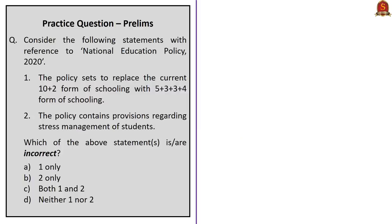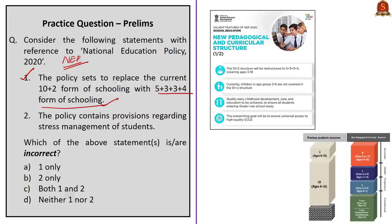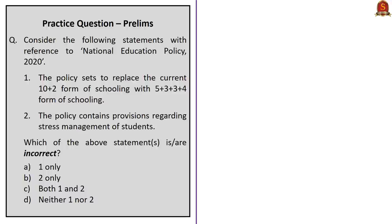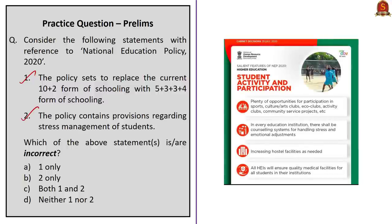Practice question 3: Consider the following statements with reference to the National Education Policy 2020. Statement 1: The policy sets to replace the current 10+2 form of schooling with 5+3+3+4. Statement 2: The policy contains provisions regarding stress management of students. Statement 1 is correct — the new 5+3+3+4 form also includes the first 3 years of education through Anganwadis, preschooling, or Balavatikas. Statement 2 is also correct — NEP 2020 contains a provision that in every education institution there shall be counseling systems for handling stress and emotional adjustments. Since we are supposed to identify incorrect statements, the correct answer is Option D: neither 1 nor 2.